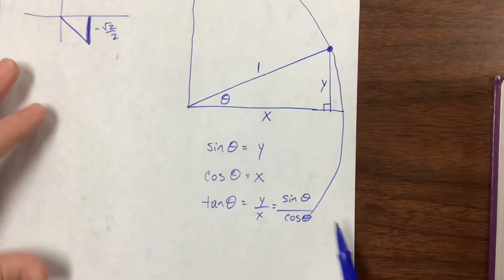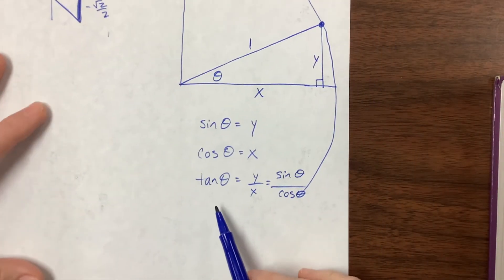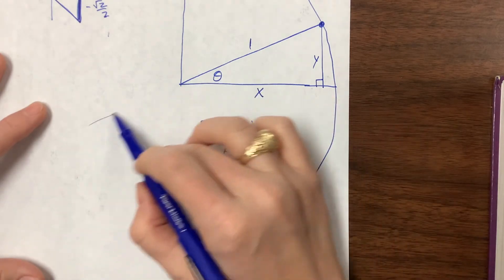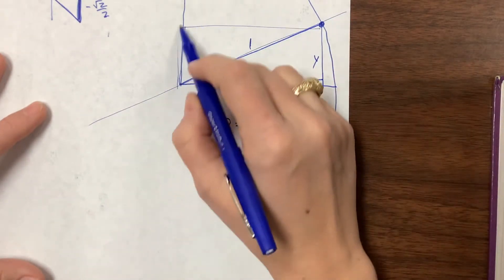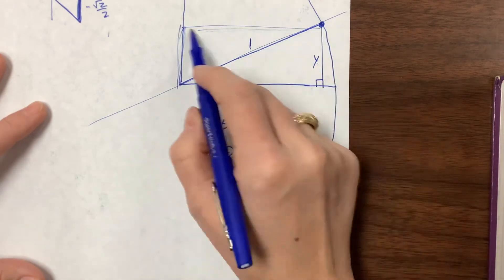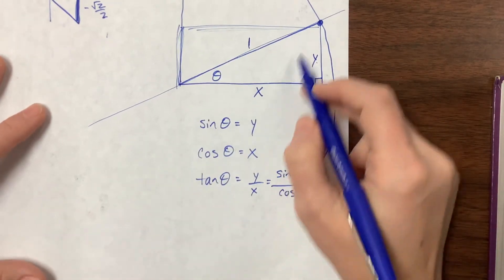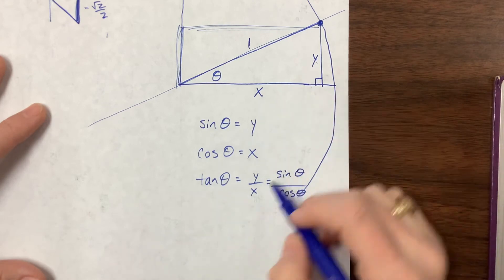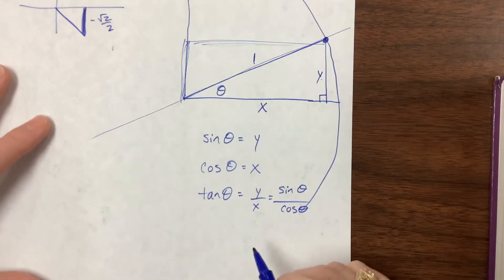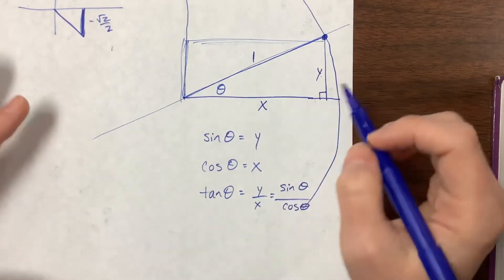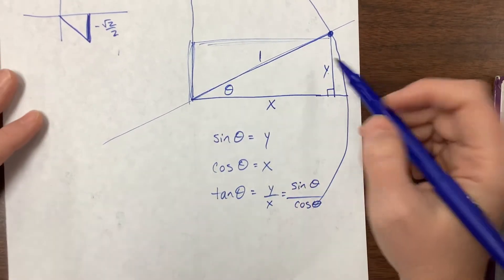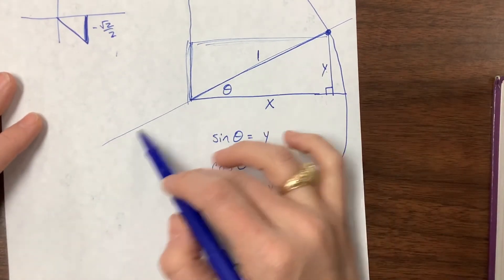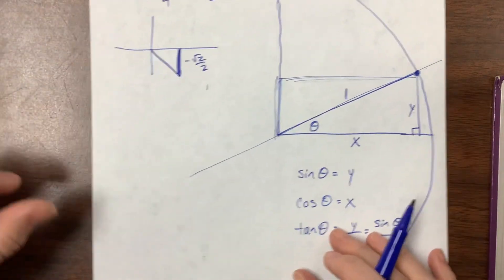One thing I forgot: notice with tangent, the slope of this line, the rise over the run. This rise is y, this run is x. The slope of this line, y over x, is equal to the tangent of the angle. Often I use that to help me figure out what my tangent value will be. How steep is that line? What's its slope? That helps me know if I've got the right answer for tangent.